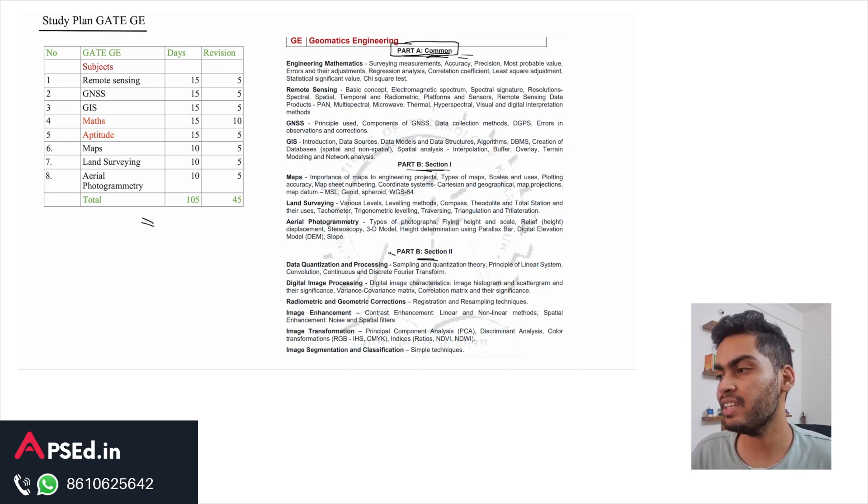And then we have Part B. In Part B there are two sections, Section 1 and Section 2. Between these two you can just choose one. You are not supposed to be studying all these topics. Based on that, you can see the syllabus is quite limited in this exam.